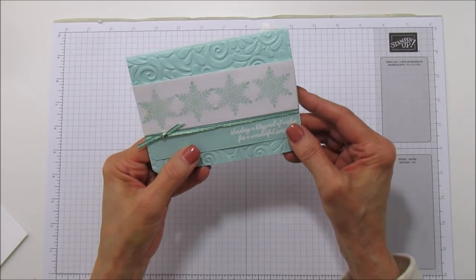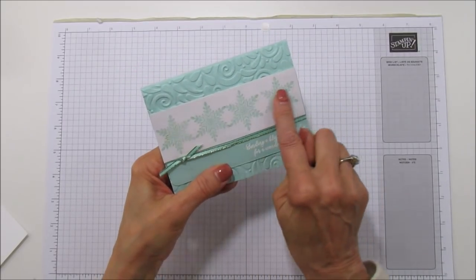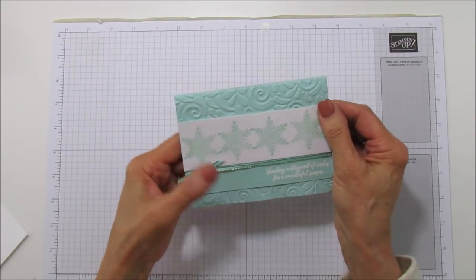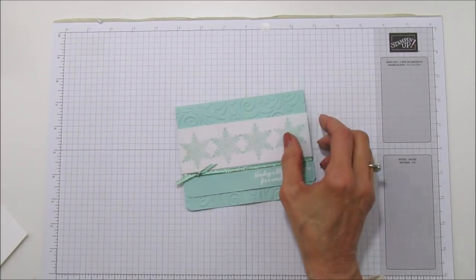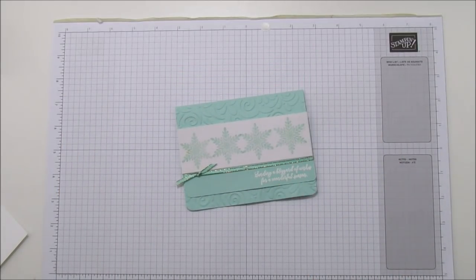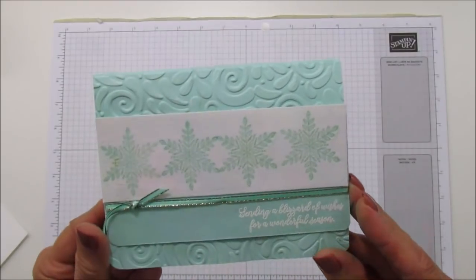The special part of this card is that this is the velvet card stock that we have. I forgot what it was called exactly, but let me look at it. The white velvet sheets. You can stamp on it.